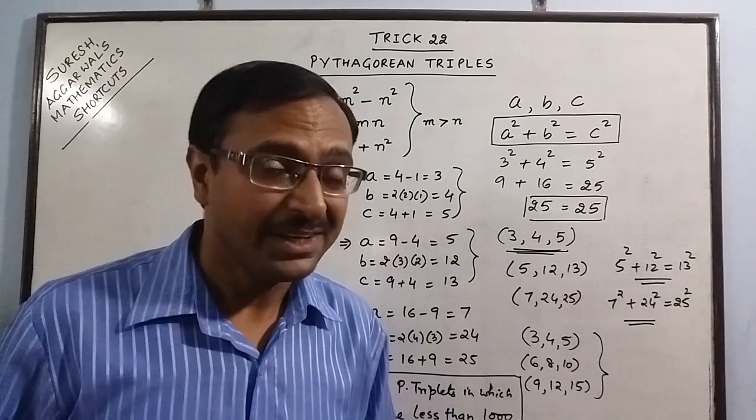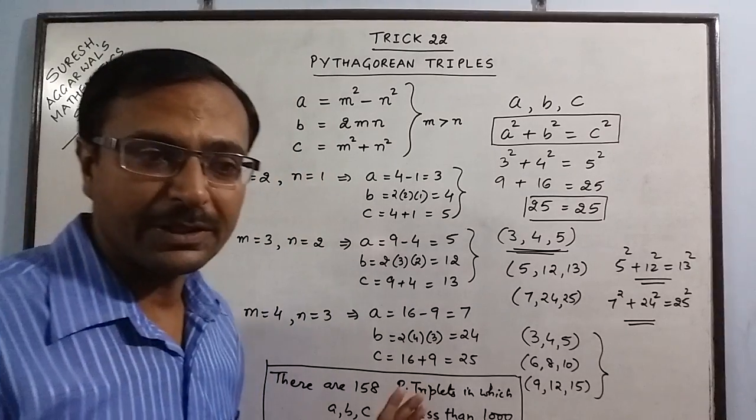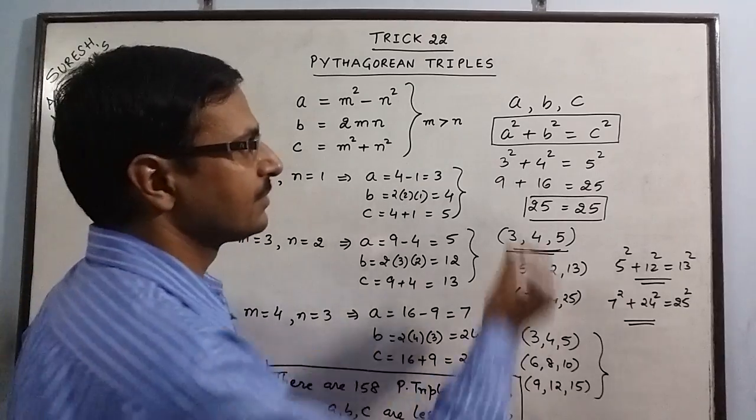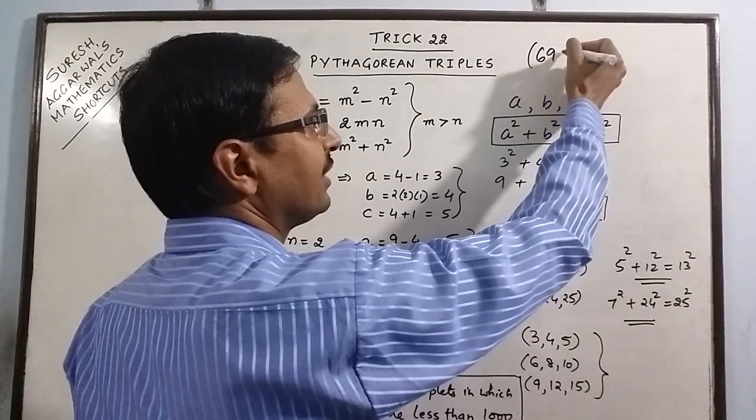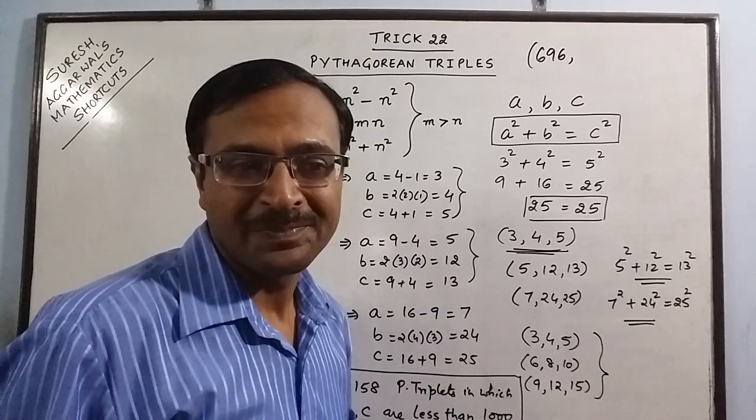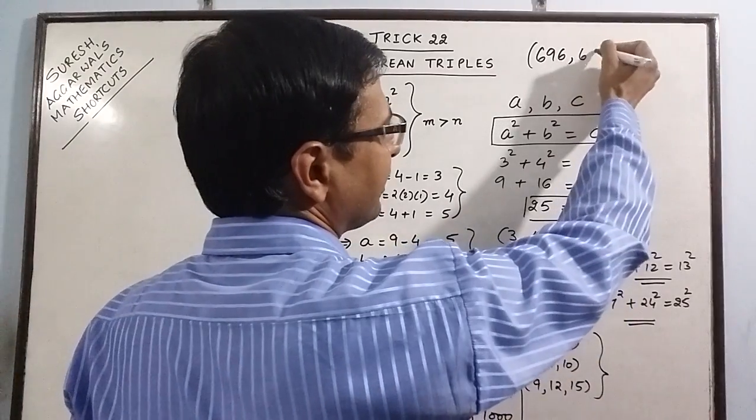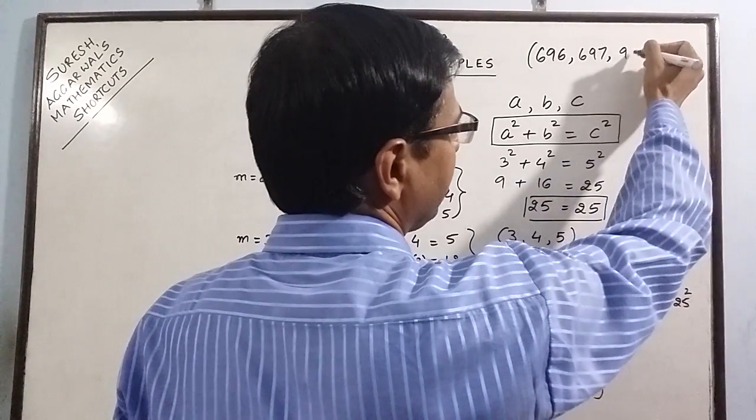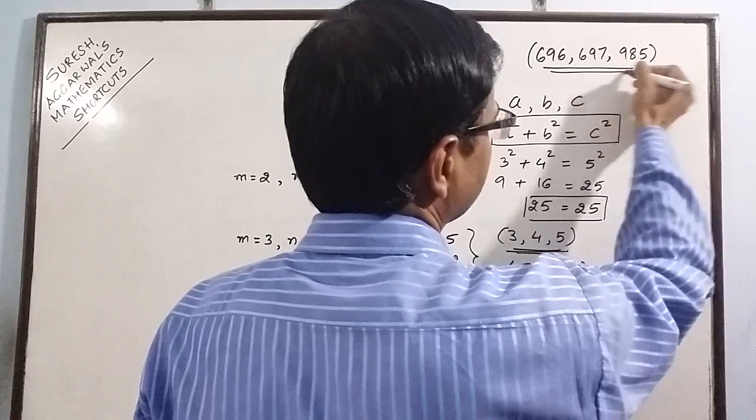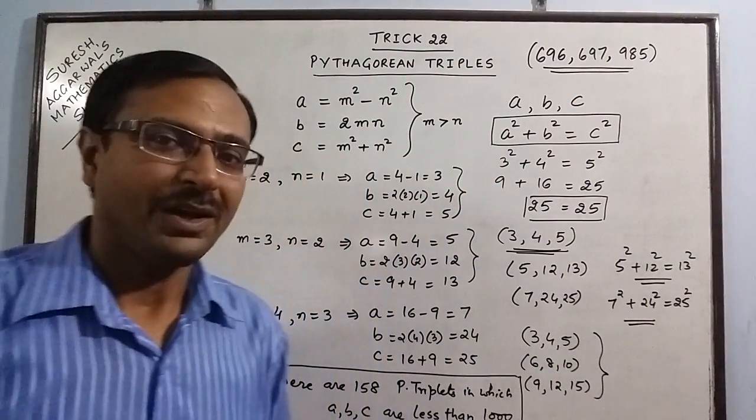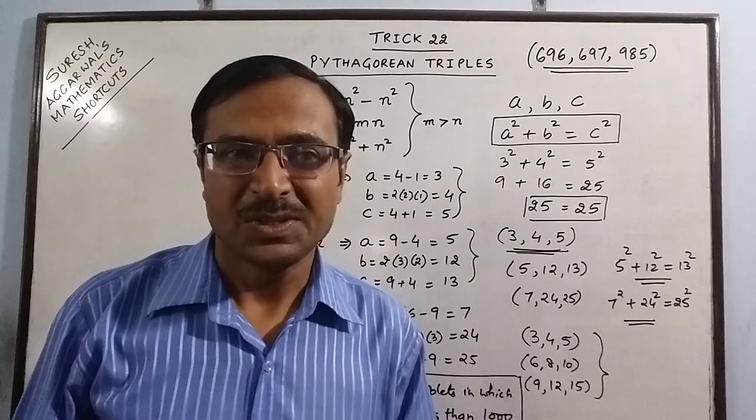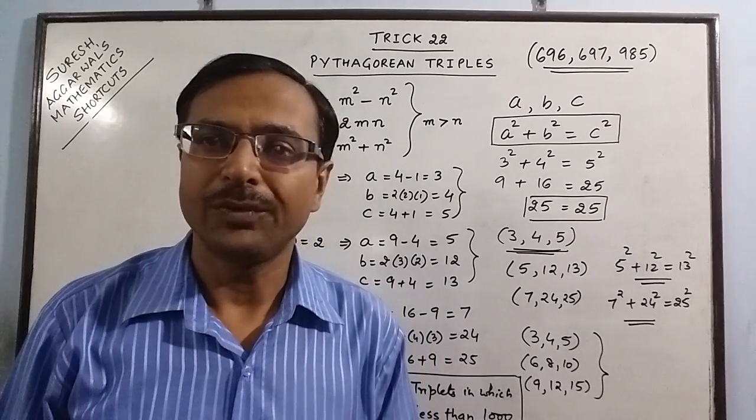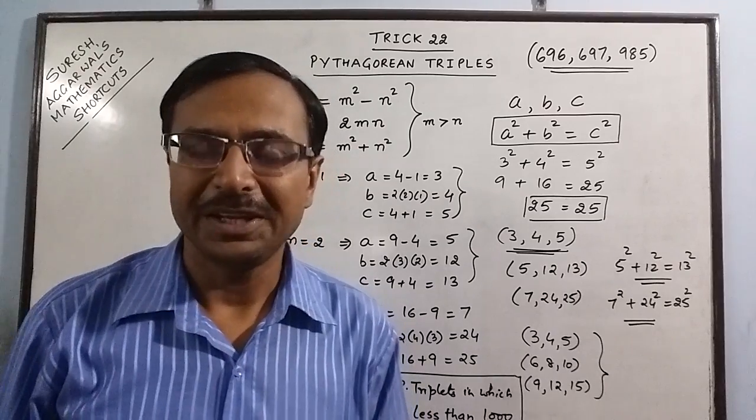And, yet another fact, the largest Pythagorean triplet in which all 3 numbers are less than 1000 is 696, that's quite big, isn't it? 697, the successor of 696 and 985. This is the largest Pythagorean triplet under 1000. So, this concept can be used to find the Pythagorean triplets and to understand them in a better way.